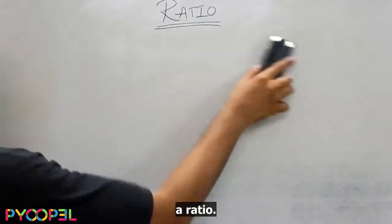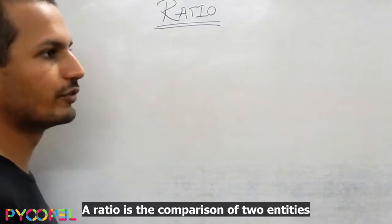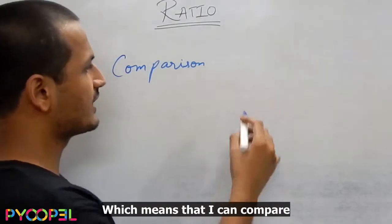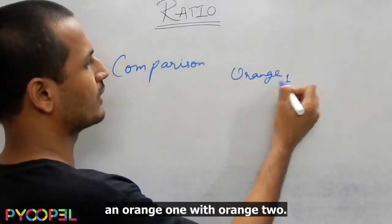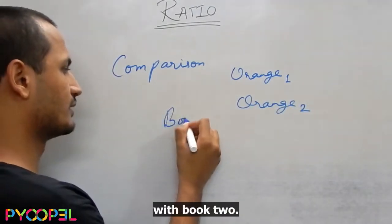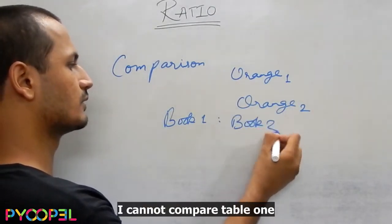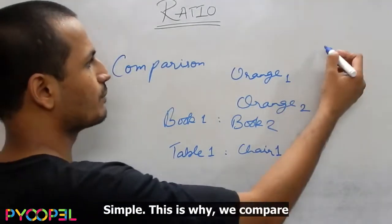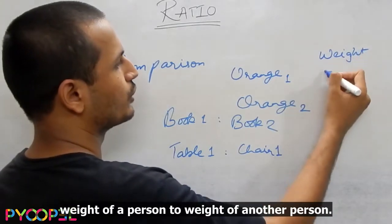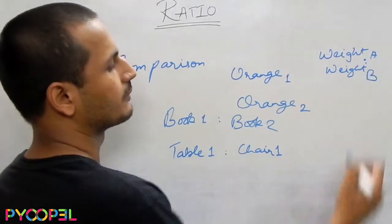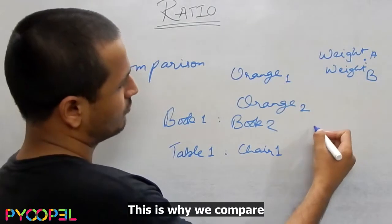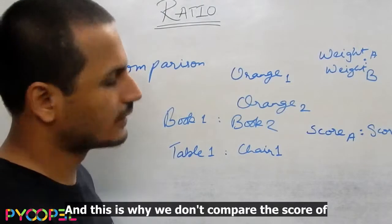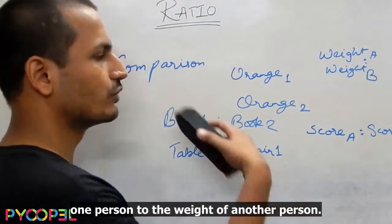Let's take a look at what exactly is a ratio. A ratio is the comparison of two entities which have same unit, which means that I can compare orange 1 with orange 2, I can compare book 1 with book 2. I cannot compare table 1 with chair 1. This is why we compare weight of a person to weight of another person, score of one person to the score of another person, and this is why we do not compare score of one person to the weight of another person.